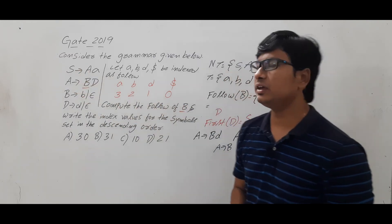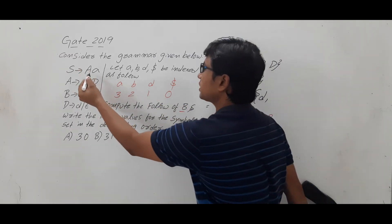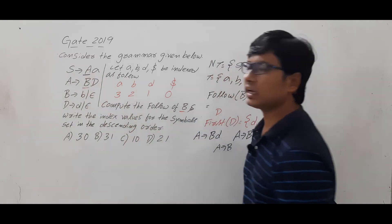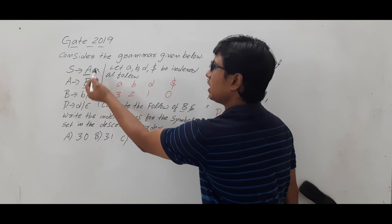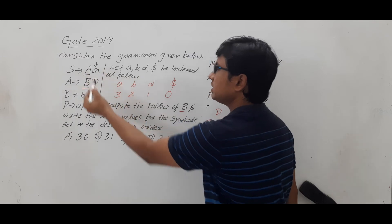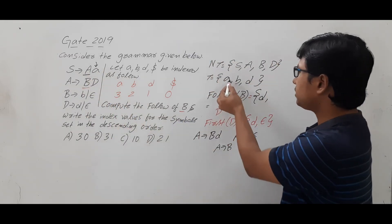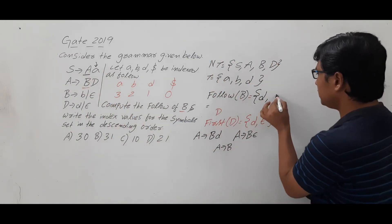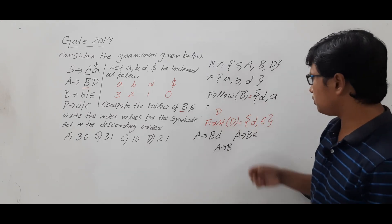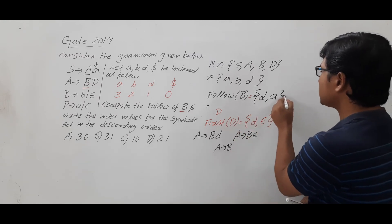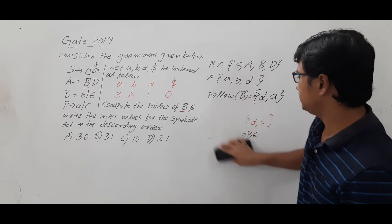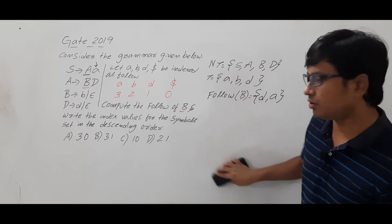Now compute Follow(A). Find where A appears in the right-hand side of productions. A appears in S → AA. Whatever follows the second A — here small 'a' is a terminal, so First of 'a' is 'a' itself. Therefore Follow(A) = {a}. So Follow(B) = {d, a}, meaning small 'd' and small 'a'.